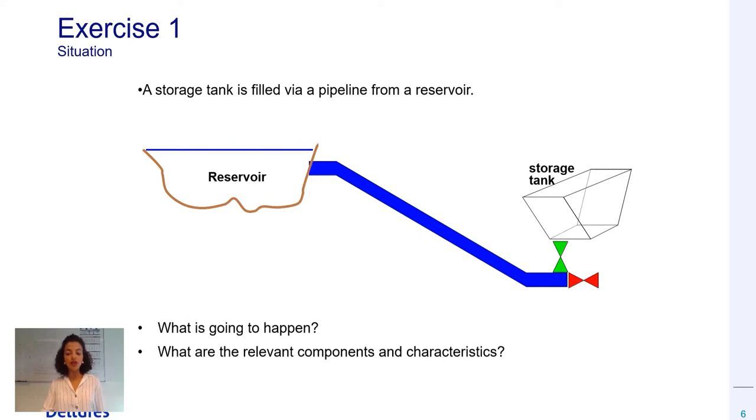To properly model the pipeline system, we need to ask ourselves what are the relevant components and characteristics. In addition, we need to anticipate what is going to happen in order to evaluate the accuracy of the modeling results.